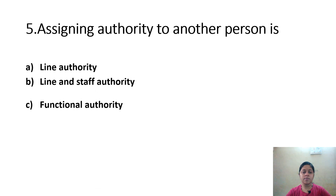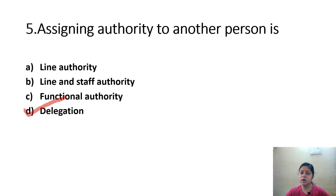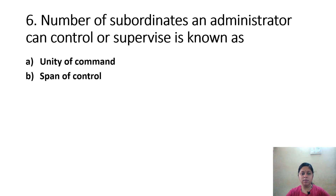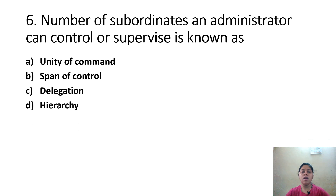Option B, Line and Staff Authority; Option C, Functional Authority; Option D, Delegation. Correct answer is Option D, Delegation. Regarding Span of Control: Option B, Span of Control; Option C, Delegation; Option D, Hierarchy. Correct answer is Option B, Span of Control — referring to how many subordinates one officer can effectively supervise.